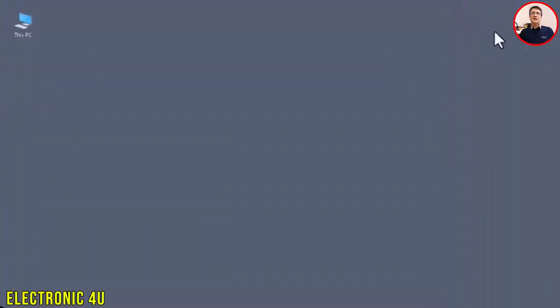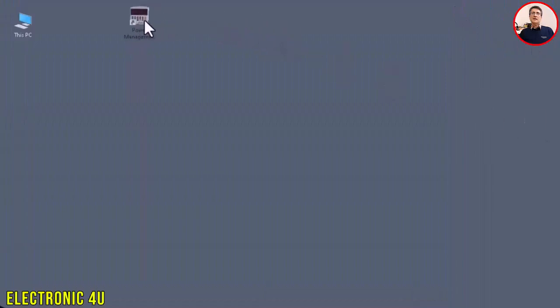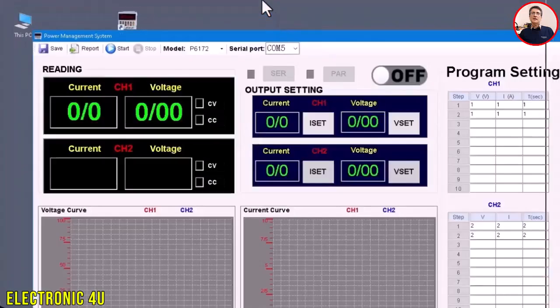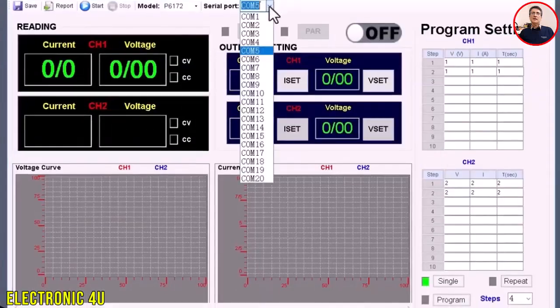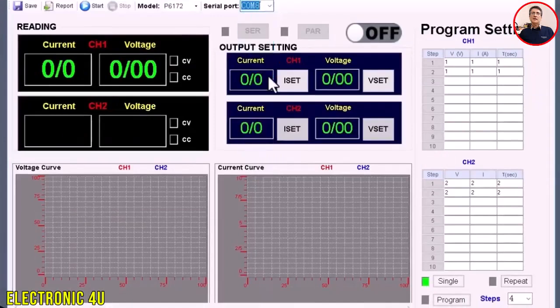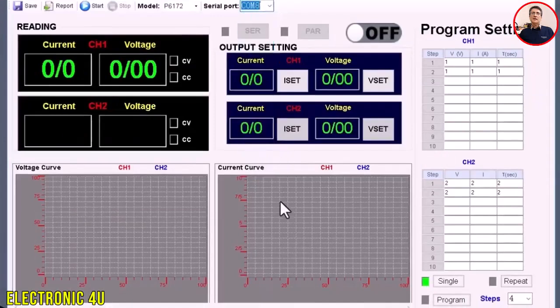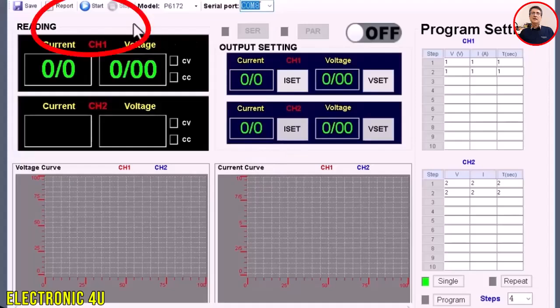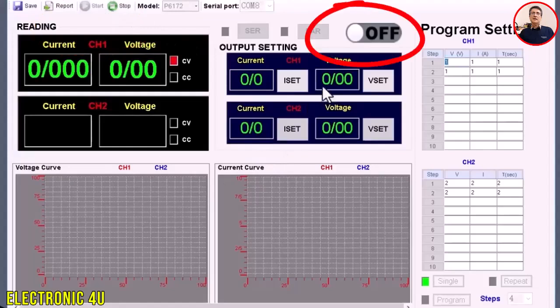Now we run the software we installed. The program interface is very simple. To connect, click the Serial Port button and select the port number we saw in Device Manager. Here it's port number 8. Then click the Start button, and then click the Off button.